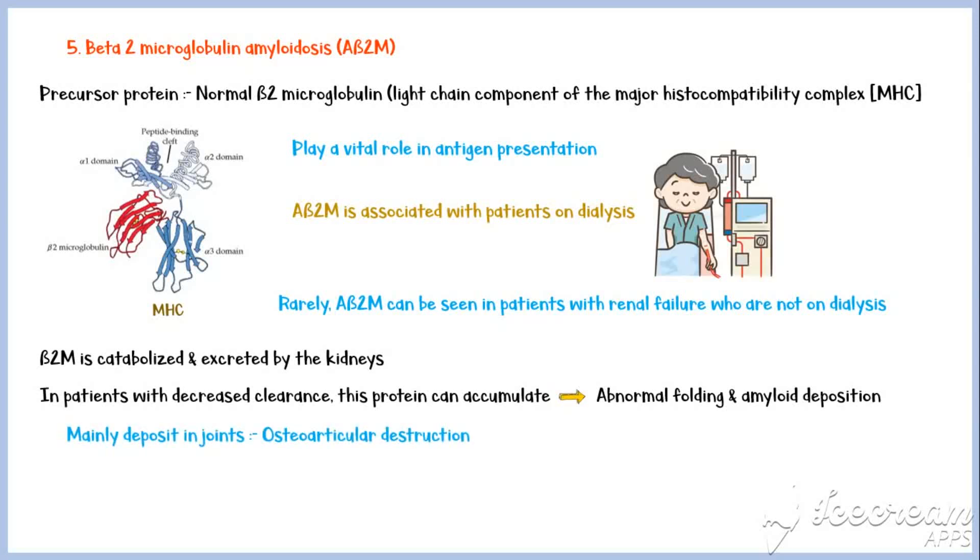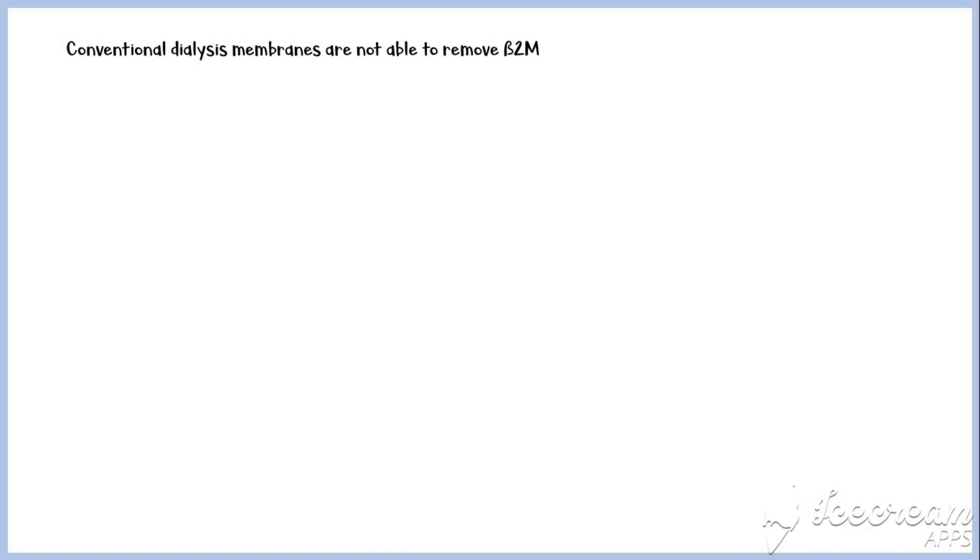These amyloids mainly deposit in joints, causing osteoarticular destruction. Conventional dialysis membranes are unable to remove beta-2-microglobulin. This is the reason for accumulation of this protein in dialysis patients.